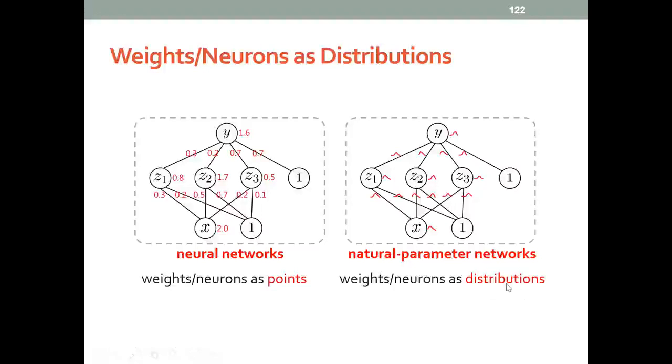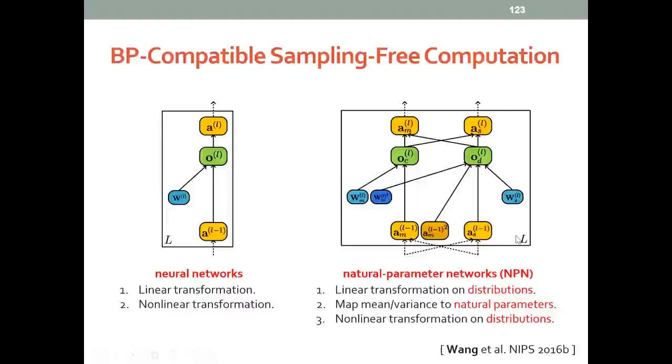Since these distributions are parameterized by natural parameters, we call this framework natural parameter networks. To give you more details, in each layer of the natural parameter networks or NPN, we first directly perform linear transformation on the distributions and map the mean and variance to the corresponding natural parameters. Then we perform nonlinear transformations on these distributions, parameterized by the natural parameters.